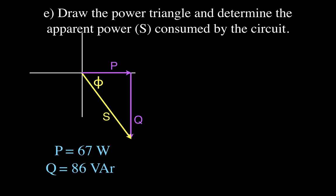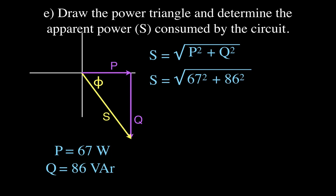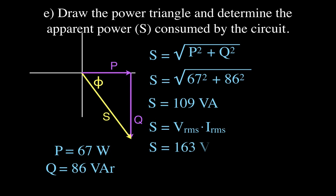Using the Pythagorean theorem, S equals the square root of P squared plus Q squared — the square root of 67 squared plus 86 squared — giving an apparent power of 109 VA. You can also calculate apparent power simply as V-RMS times I-RMS: 163 times 0.67 also gives 109 volt-amperes.